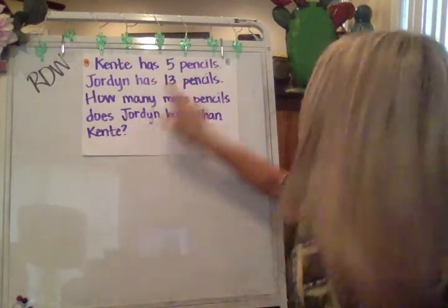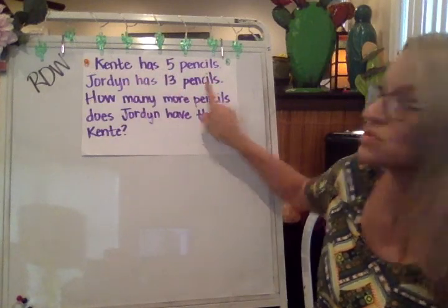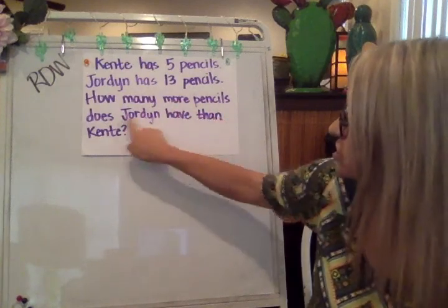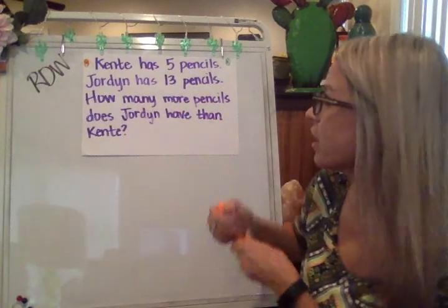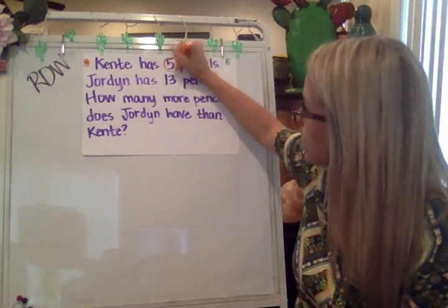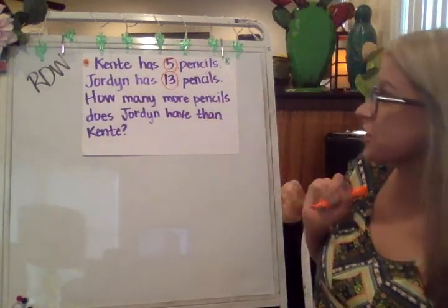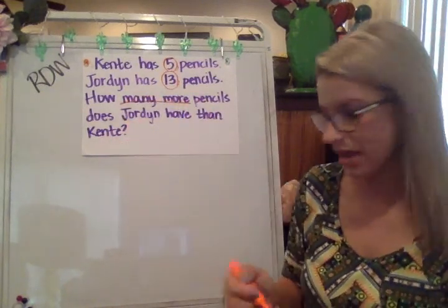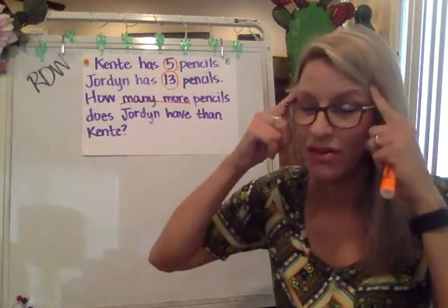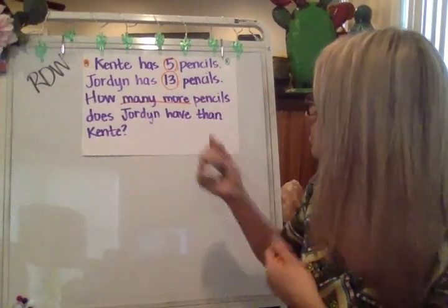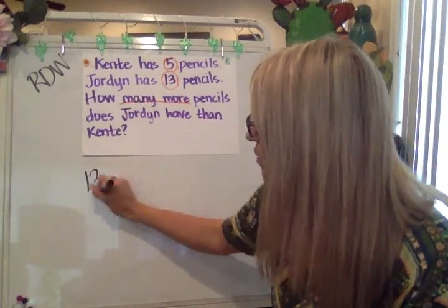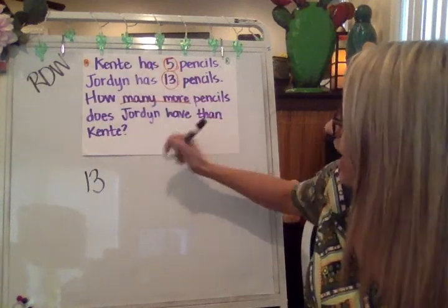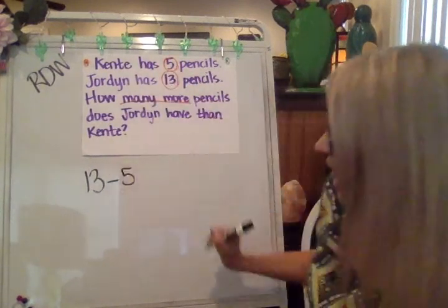Kente has five pencils. Jordan has 13 pencils. So we've got one person that has five and one person that has 13, and we're trying to figure out how many more pencils Jordan has than Kente. Here's Jordan — she's got these pencils, she has 13. We know that number is larger than the five. Kente has five. We're trying to figure out how many more. That's a subtraction equation.